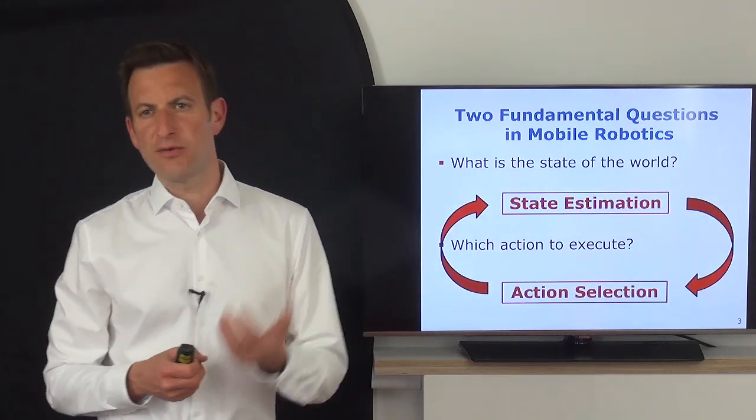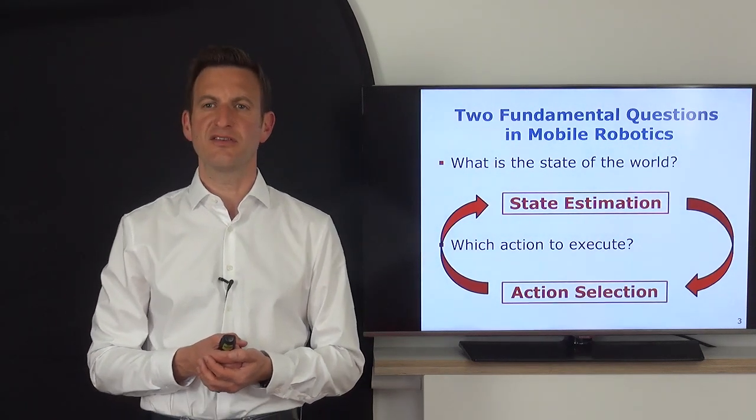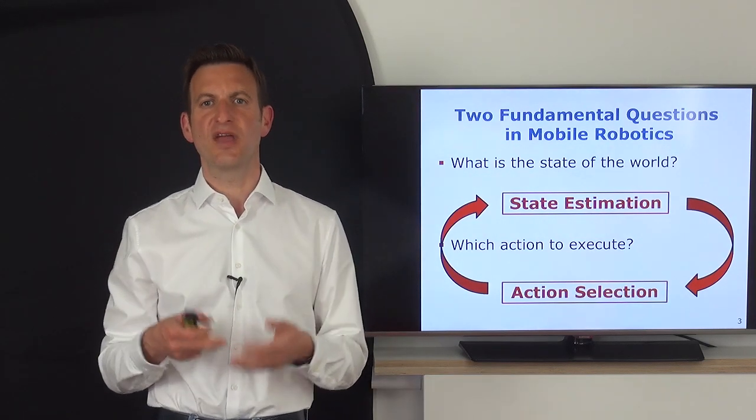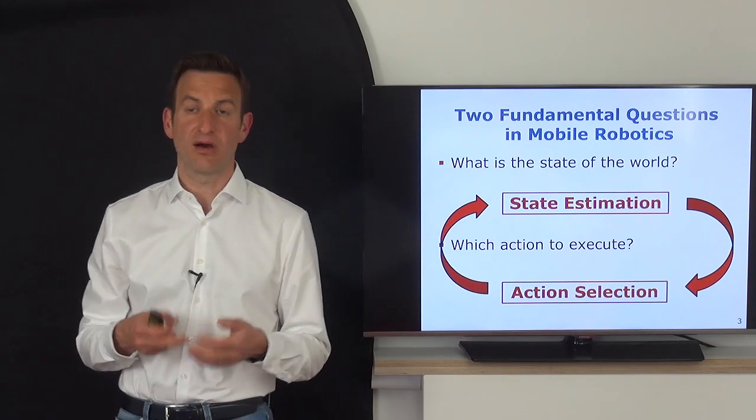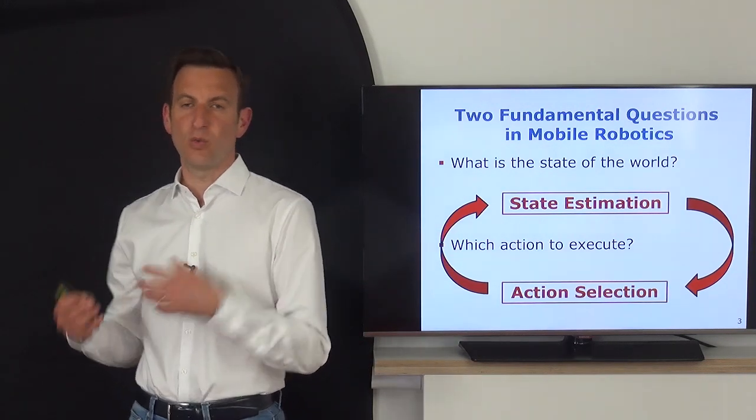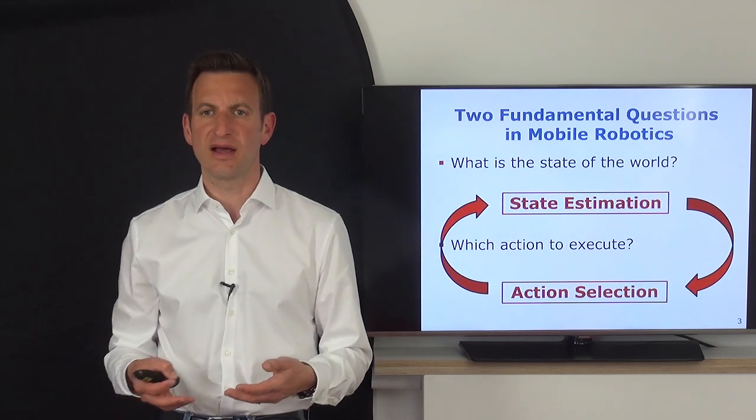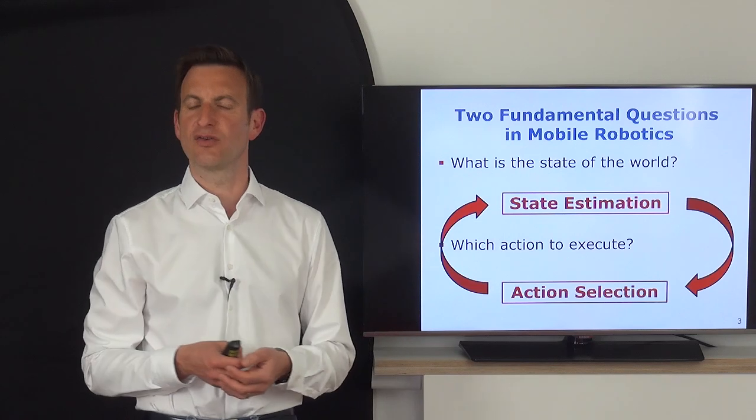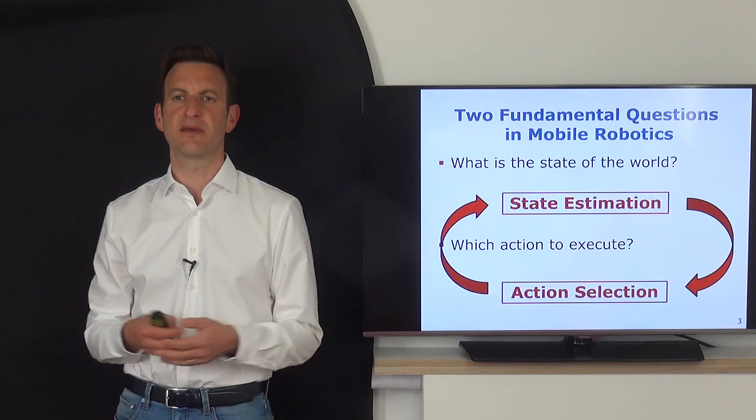The way to approach the first question is actually through state estimation. Through our sensor observations, we can try to estimate in which state the world is in, to get an idea what the current state of the world actually is. Once we know what's around us, where we are, what the world looks like, we can try to reason about which action should the system execute to come closer to its goal or reach a certain goal state.